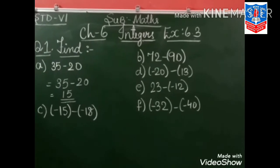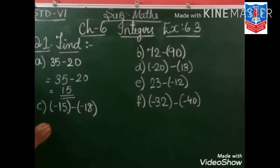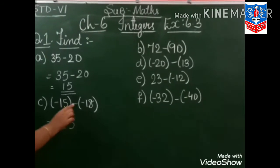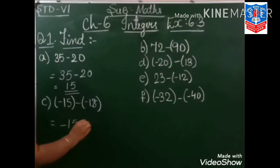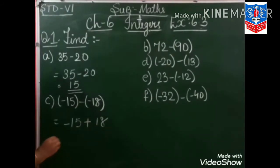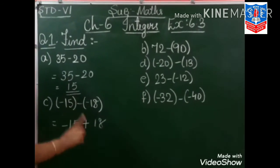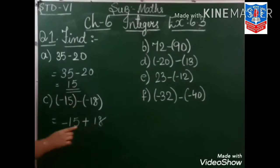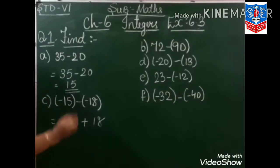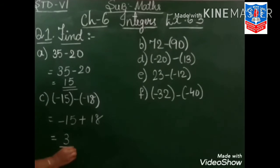Now let us do sum number C: minus 15 minus minus plus, plus 18. Minus minus is plus, so 18 minus 15 is 3, and the greater sign is plus. So our answer is 3.